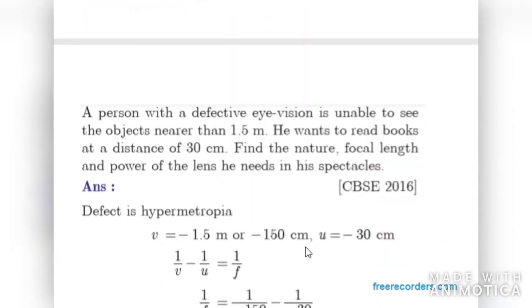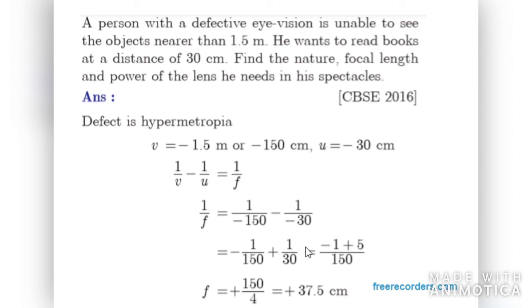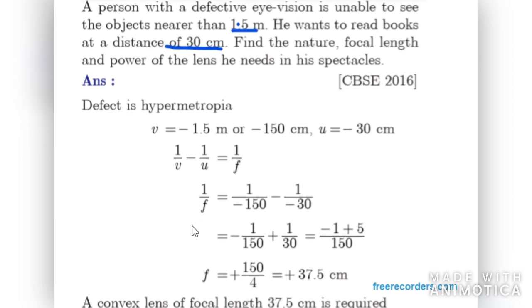Moving on to next. A person with a defective eye vision is unable to see the objects nearer than 1.5 meter. He wants to read books at a distance of 30 centimeters. That means my U is 30 centimeters, and V is 1.5 meters. Now we can get the focal length of the lens by using lens formula: 1 over V minus 1 over U equals 1 over F. As you can see, 1 over F is coming out to be 37.5 centimeters.